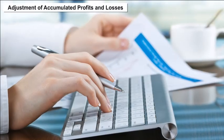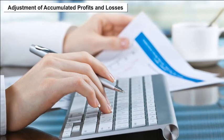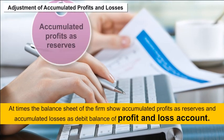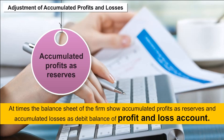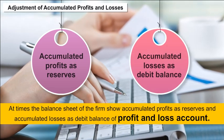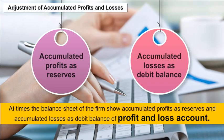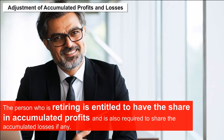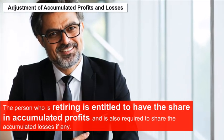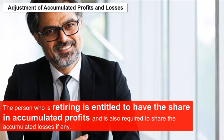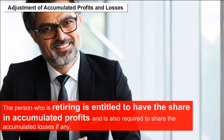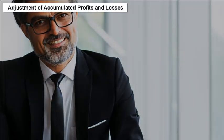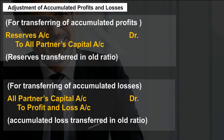Adjustment of accumulated profits and losses: The balance sheet may show accumulated profits as reserves and accumulated losses as a debit balance of the profit and loss account. The retiring partner is entitled to his share in accumulated profits and is also required to share accumulated losses, if any. Journal entries are passed for these adjustments accordingly.